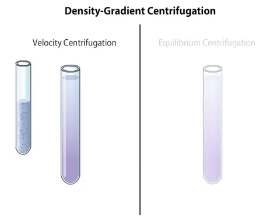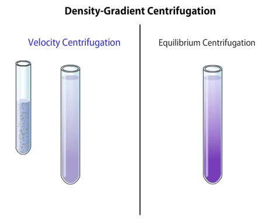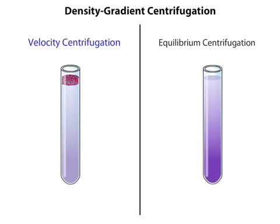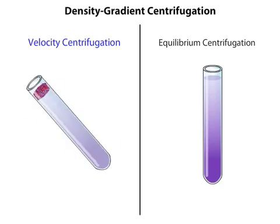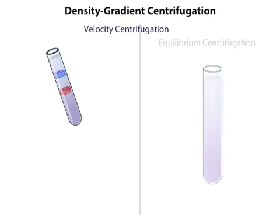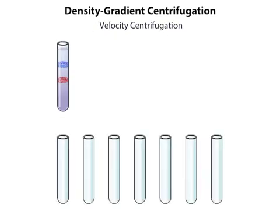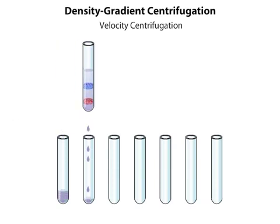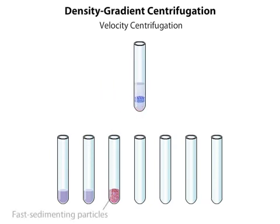Velocity centrifugation and equilibrium centrifugation. In velocity centrifugation, the sample is added carefully to the top of the tube in a narrow zone. The sucrose gradient below the sample serves to prevent convective mixing of the solutions and keeps the particles in tight zones during centrifugation. Particles of different sizes sediment through the gradient at different rates, moving as discrete bands. The density of sucrose at the bottom of the tube is less than the density of the organelles, so centrifugation is stopped before the particles can form a pellet. Following centrifugation, the different zones can be isolated in separate collection tubes via a hole formed in the bottom of the tube. The fast sedimenting particles emerge first; the slow sedimenting particles emerge later.